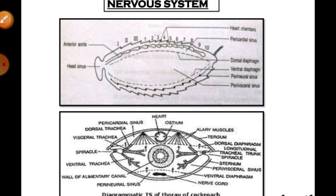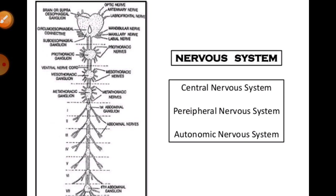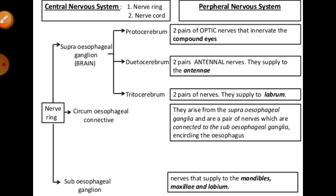In the head region, the brain is represented by the supraoesophageal ganglion, which supplies nerves to the antennae and compound eyes. Nerves arise from all the ganglia in the head, thorax, and abdomen to control their respective regions. There is also a CNS, PNS, and ANS found in their body. In the central nervous system, there is the nerve ring and the nerve cord.